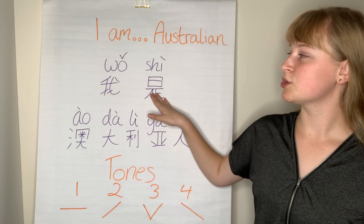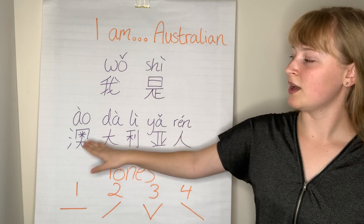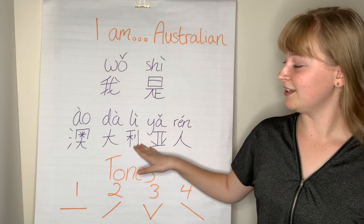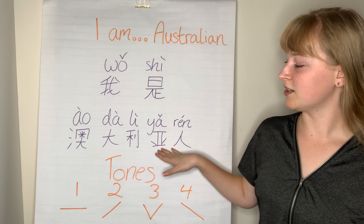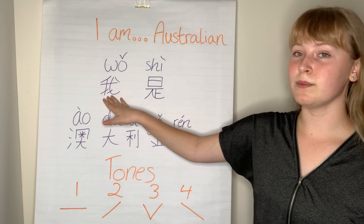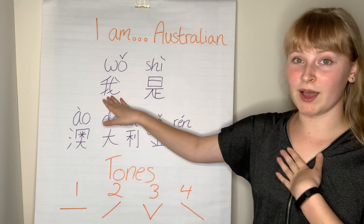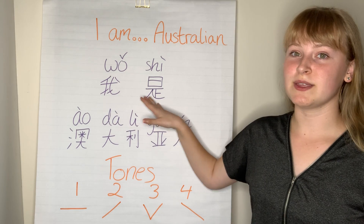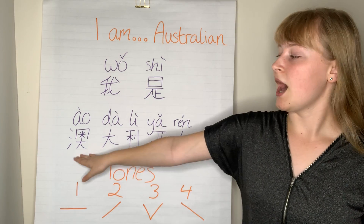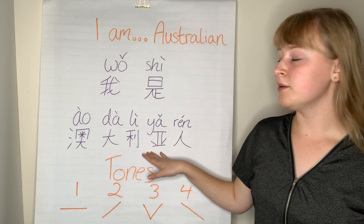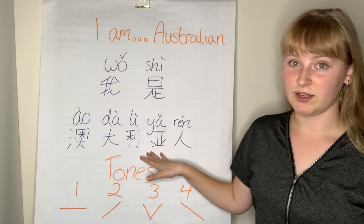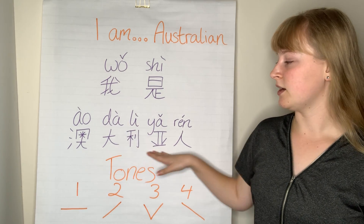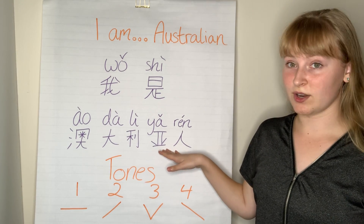我是澳大利亚人. 我 means 'my' or 'I', 是 means 'is' or 'am', 澳大利亚 means 'Australia', and 人 means 'person'. So 澳大利亚人 means 'Australian'.